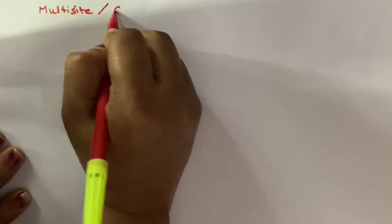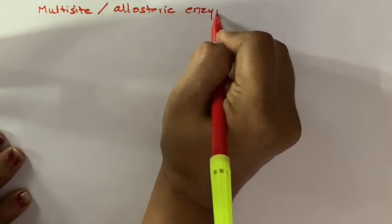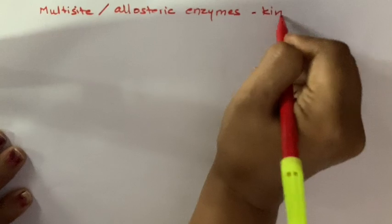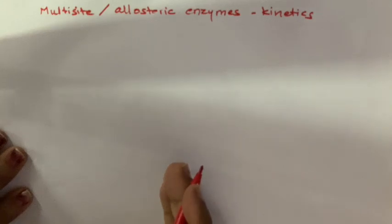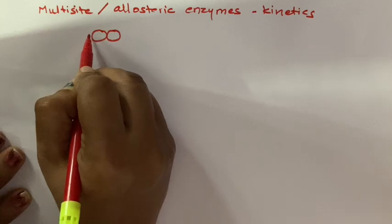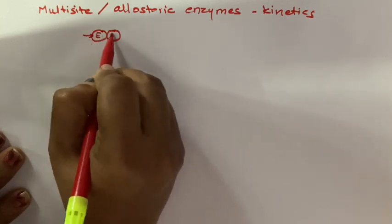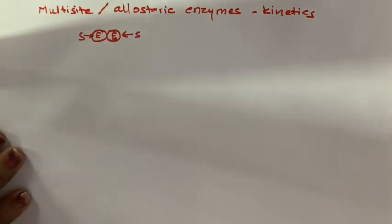In this video we will learn about Multisite or Allosteric Enzymes and their kinetics. If any enzyme has got more than one site for any substrate to bind, then that enzyme is called a Multisite or Allosteric Enzyme.